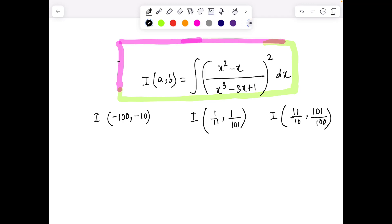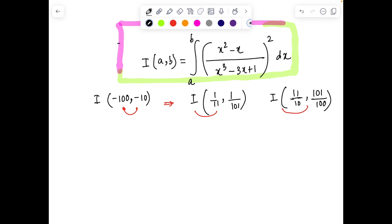Good afternoon everyone. In response to yesterday's question, here is a detailed solution. You are asked to relate I(-100, -10), I(1/11, 11/10), and I(1/100, 11/10). The relation between those limits of integration is not very difficult. If you take the inverse of 1/11, you get 11/1 or 11.